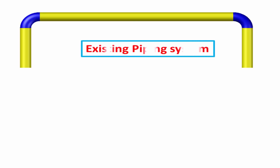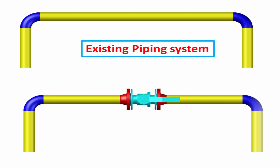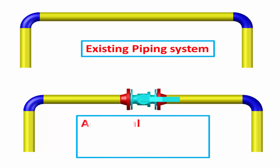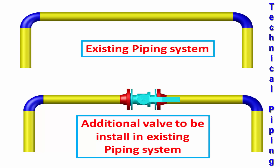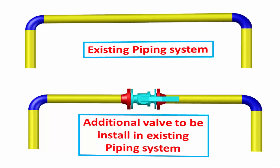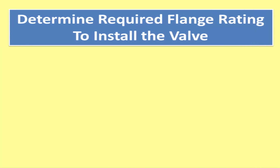This is an existing piping system in a plant. We need to control this line, so an additional valve is to be installed in the existing piping system. Now we need to determine the required flange rating class to install the valve.